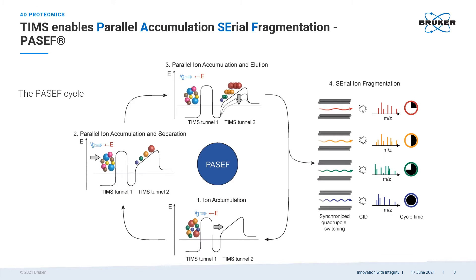On this slide, I want to remind you about what the unique features are of the TIMS-TOF platform. First of all, it includes trapped ion mobility separation, which is what TIMS stands for. That enables the parallel accumulation serial fragmentation method developed in collaboration with Professor Matthias Mann at the Max Planck Institute in Martinsried. In the first step, ions are accumulated in a tunnel that's about 10 centimeters long, broken up into two tunnels — TIMS-Tunnel 1 and TIMS-Tunnel 2 — with high velocity gas flow from the electrospray source.